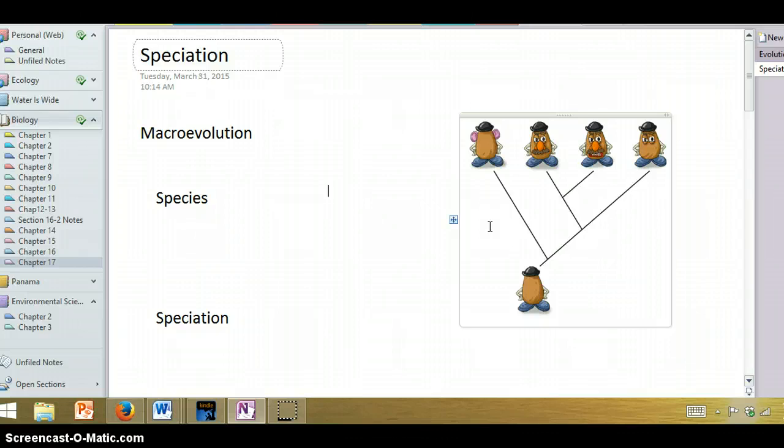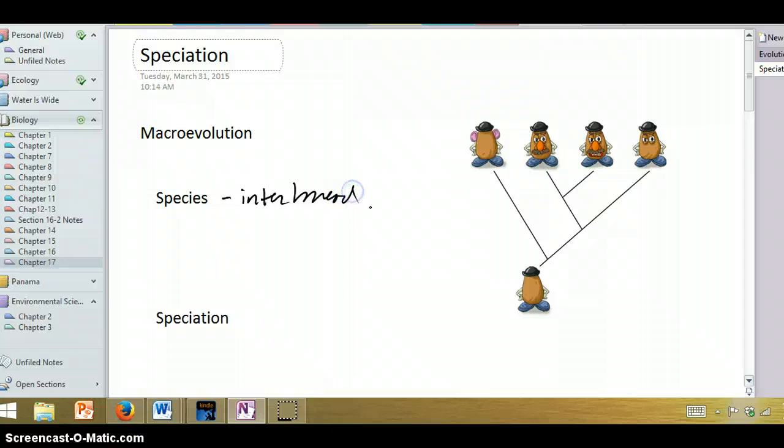So first, how do we define a species? Well, the typical way is they are organisms that can interbreed or essentially do interbreed under normal conditions.